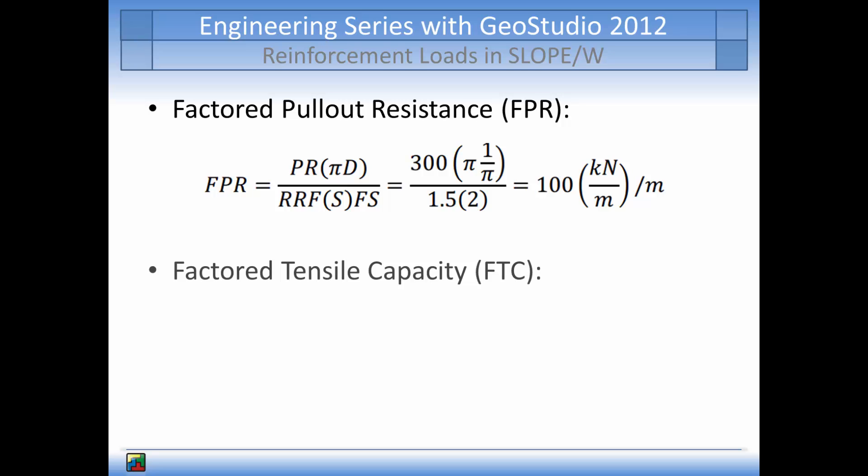The maximum pull-out force must not exceed the factored tensile capacity, which has been calculated here as 667 kilonewtons. Since the bond length is only 3 meters, it will not be possible for the pull-out force to reach this value.